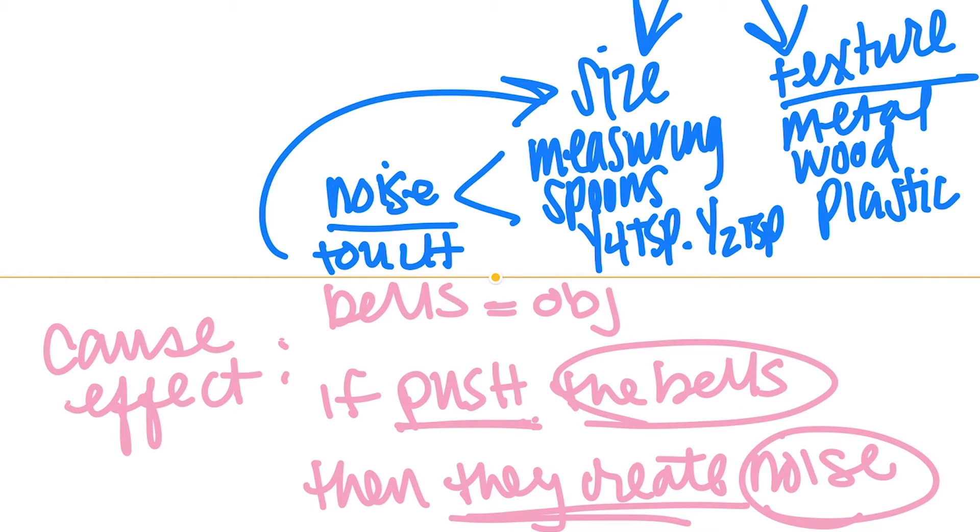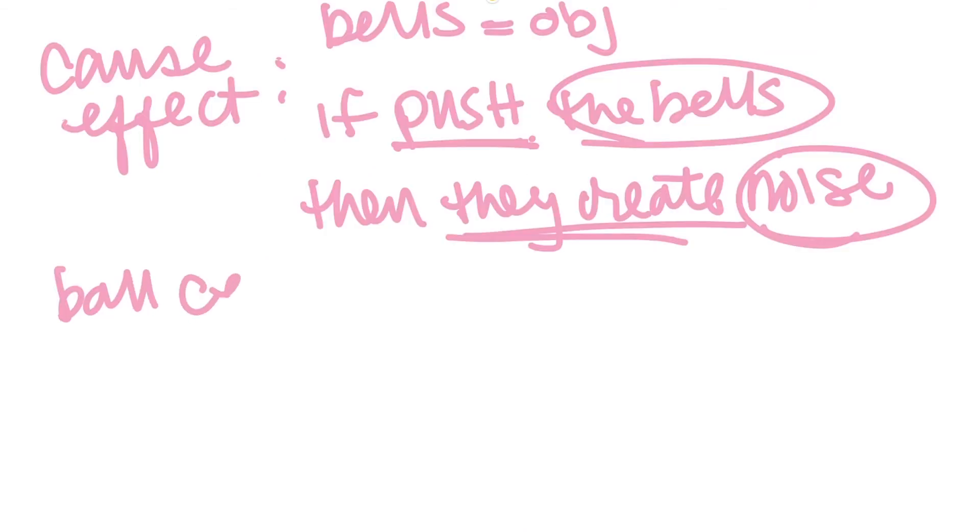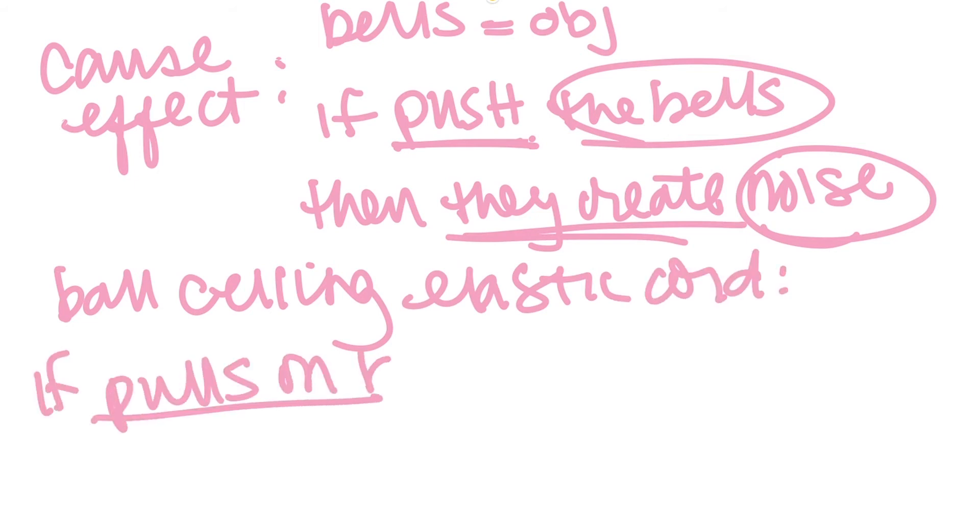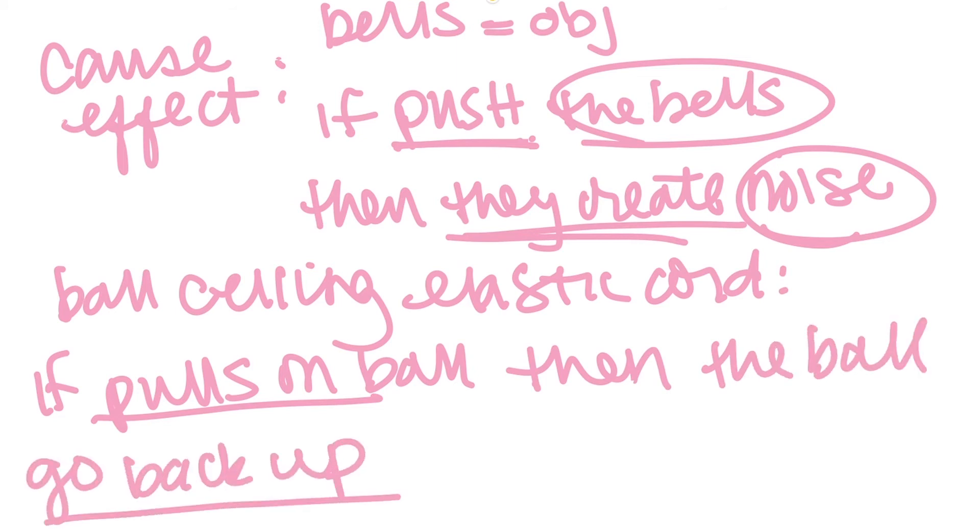Another option of cause and effect could be movement of the object itself in space. If a ball is suspended from the ceiling by an elastic cord, if the kiddo pulls on the ball, then the ball will go back up.